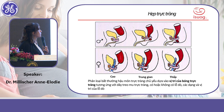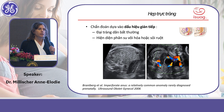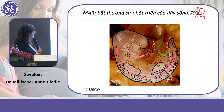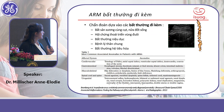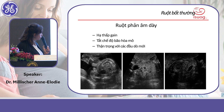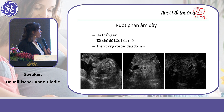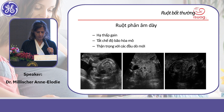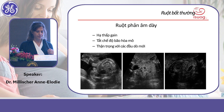Another situation is hyperechoic bowel. To diagnose this, you must lower the gain of the ultrasound, switch off the harmonics, and be careful with newer probes which can artificially produce a hyperechoic appearance. Always compare the echogenicity of the bowel wall with that of the bones.